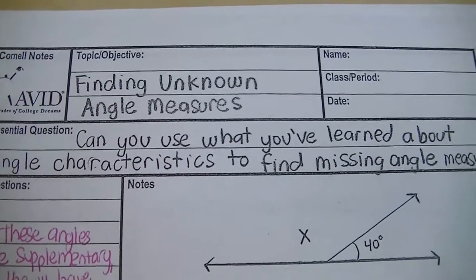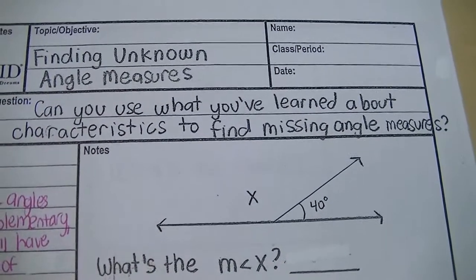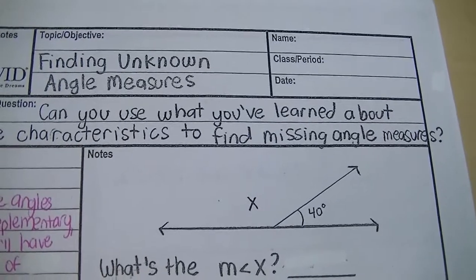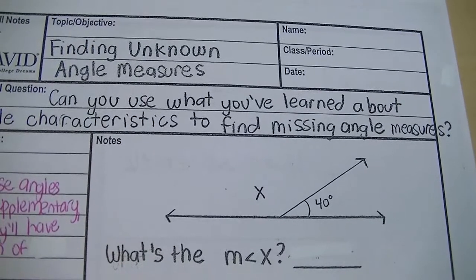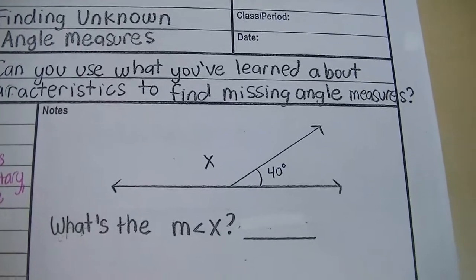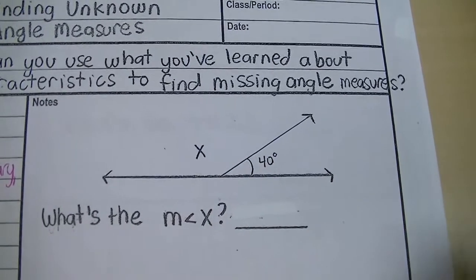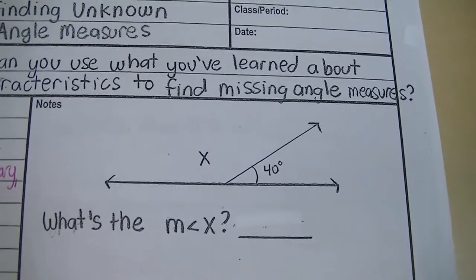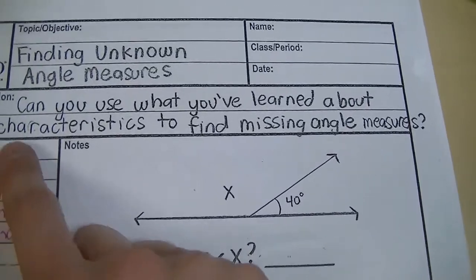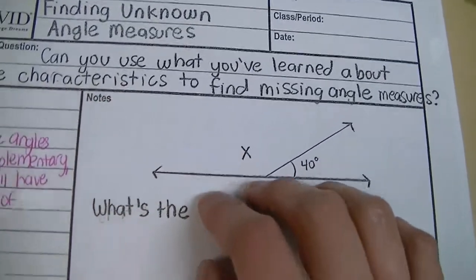The topic is finding unknown angle measures. The essential question is: can you use what you learned about angle characteristics to find missing angle measures? To find these missing angles, I don't want you to use a protractor — I want you to simply use what you know about angle characteristics to find the unknown angle.